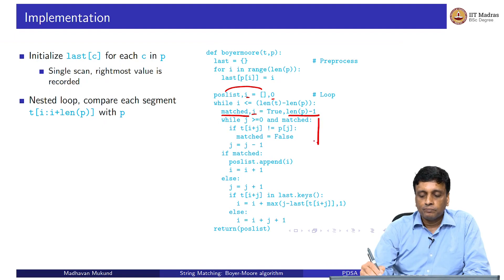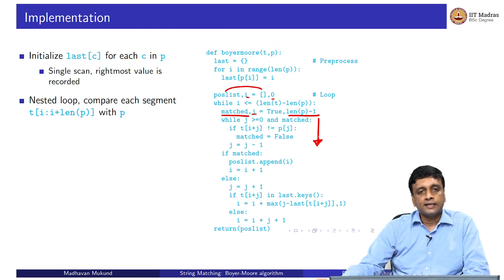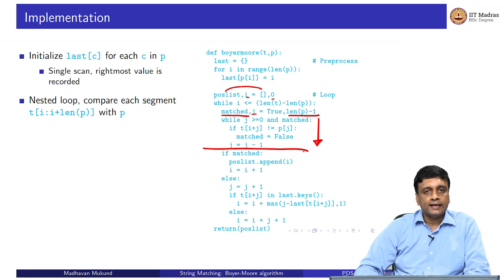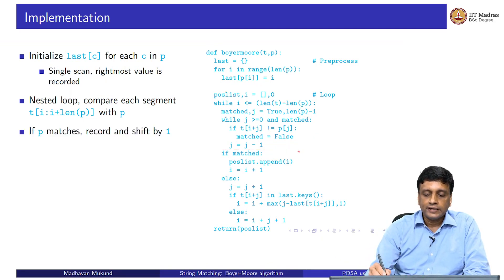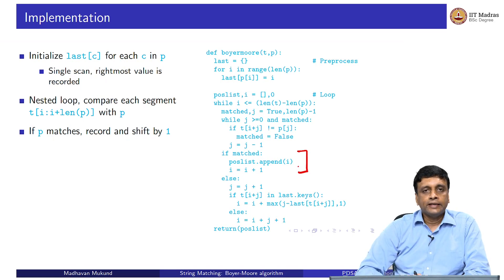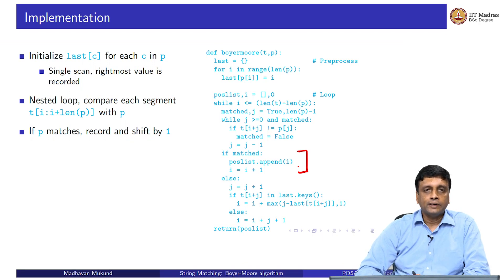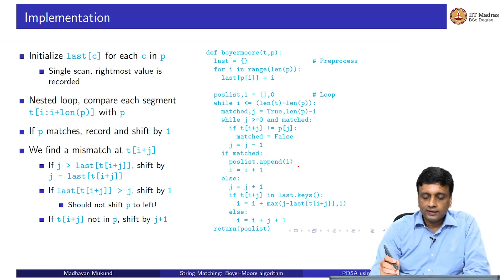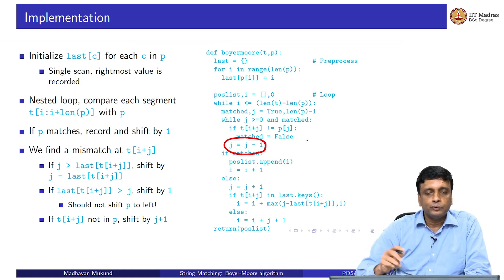We come from right to left checking for a match or mismatch. When we come out of the inner loop there are two possibilities: we have scanned the entire segment and found a match, or we found a mismatch. If there is a match, we record the current starting position I in our positions list and move to the next position by incrementing I by 1, because patterns may self-overlap. If it does not match, remember that J was decremented after the mismatch was found inside the loop.